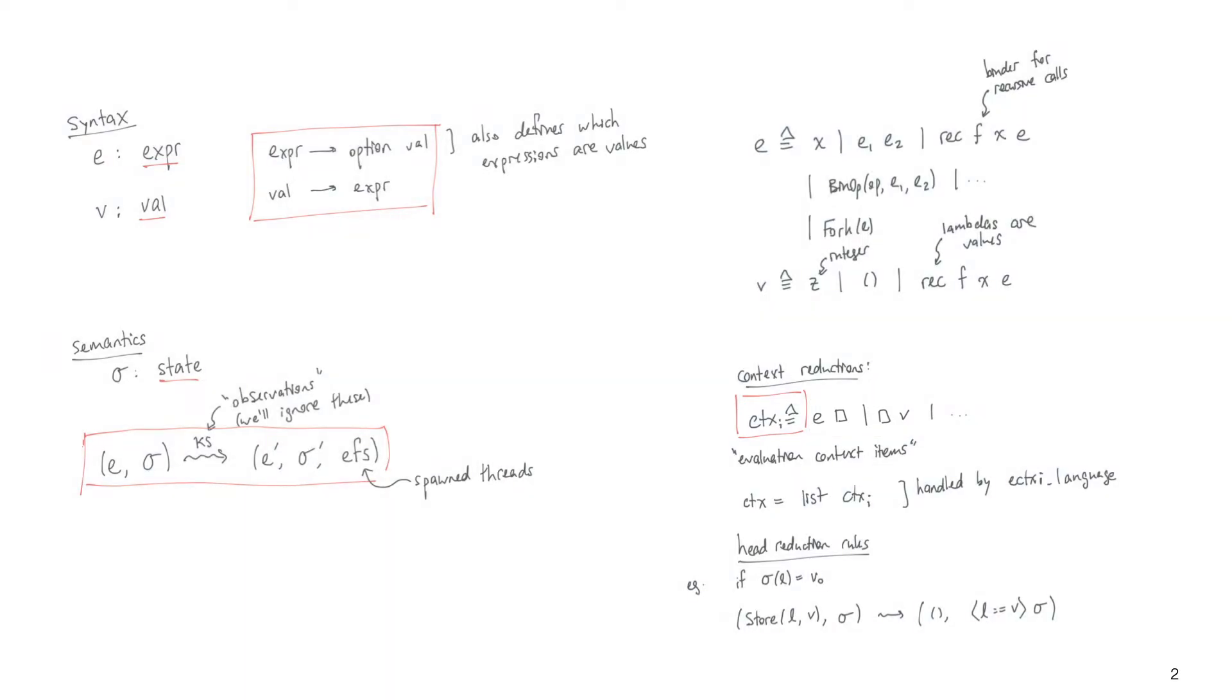After we've defined all the context reductions, we also need to define the head reduction rules that specify how to reduce each construct in the language. So here, for example, I've given the rule for store, which explains how a store modifies the heap.